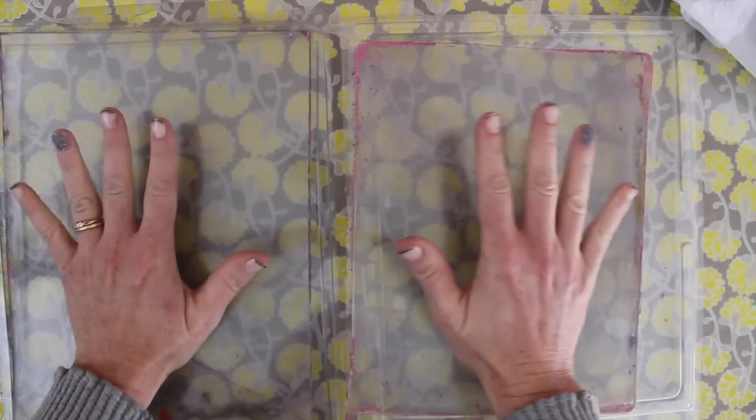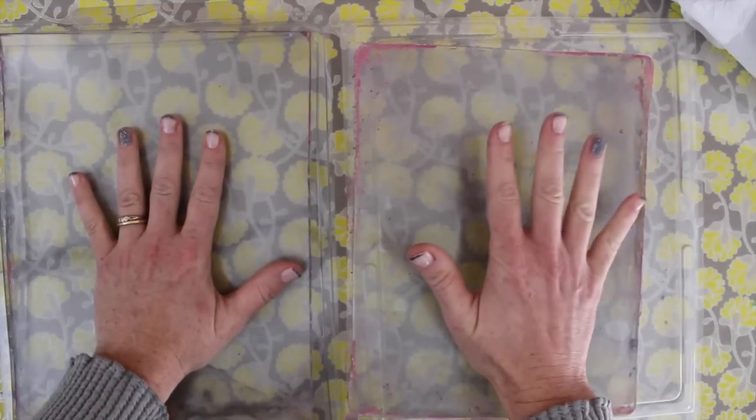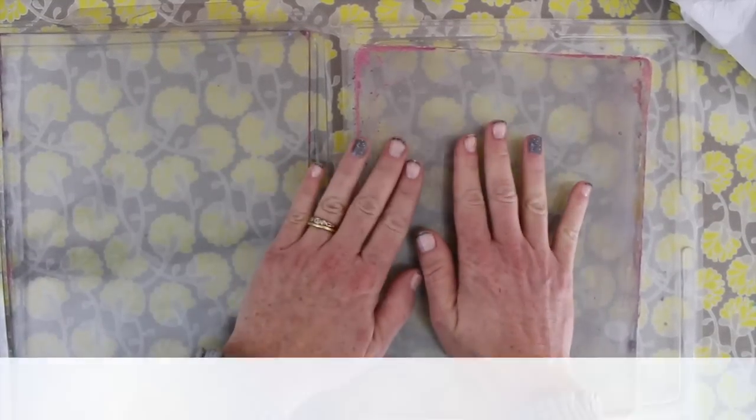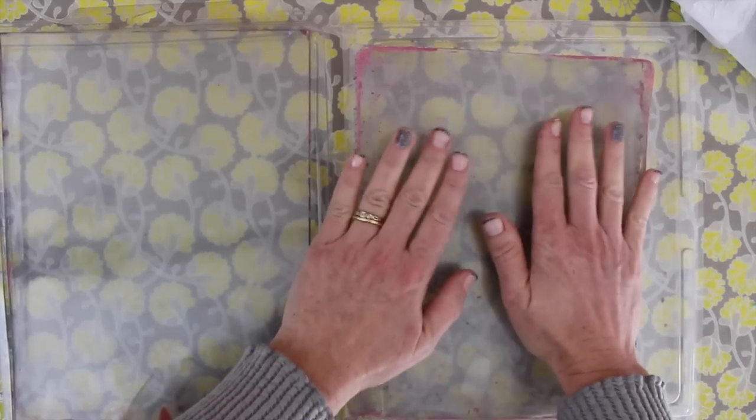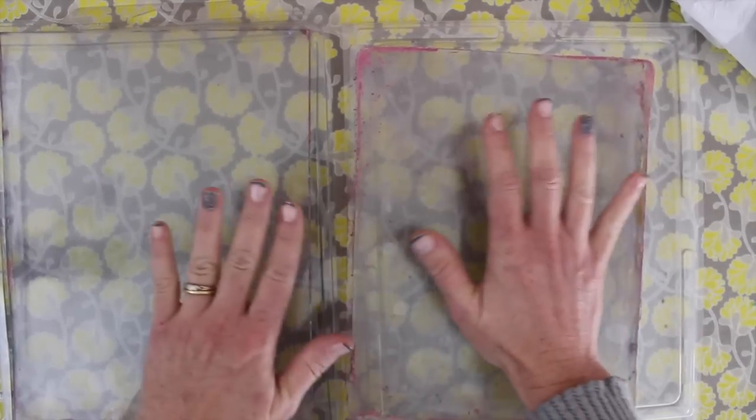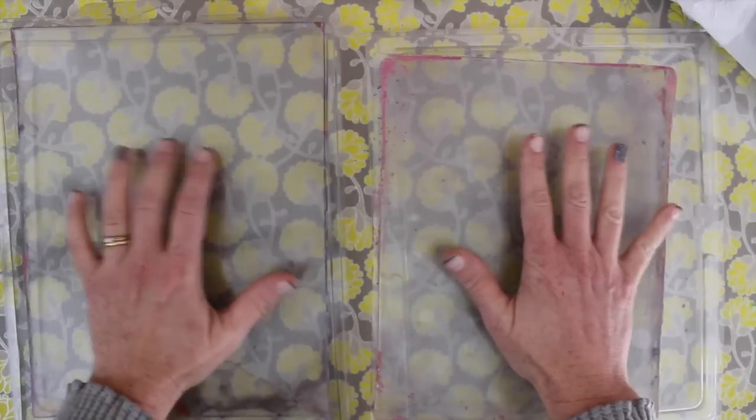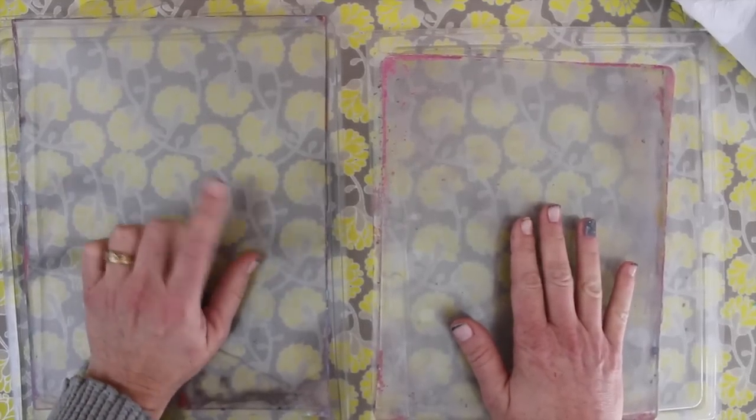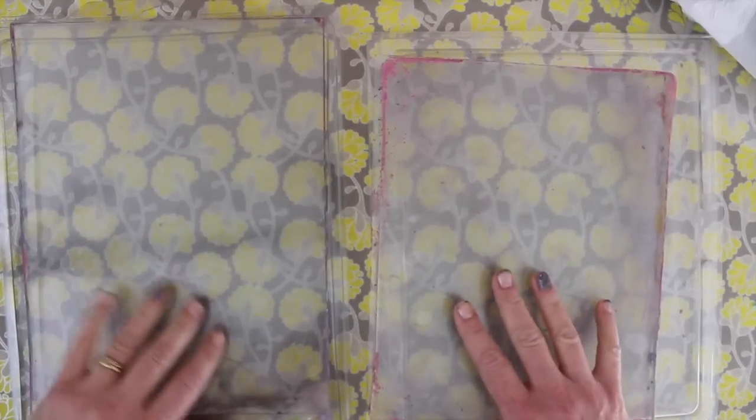The other thing is after taking off the top I can tell you that the Gelli Arts plate is just stickier. It feels more moist if that makes sense and it seems to grab the ink a lot better. This is almost more dry to the touch. It almost feels like there's a plastic sheet on top which there's not.